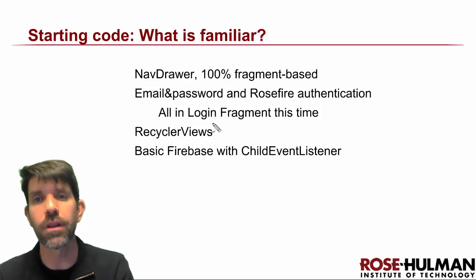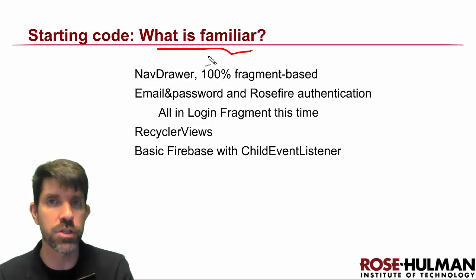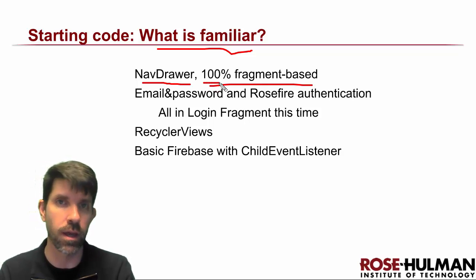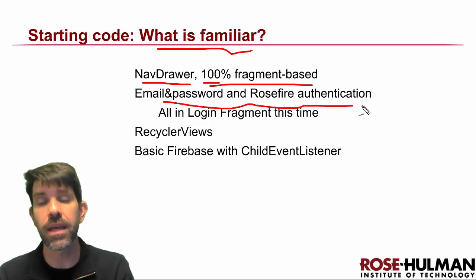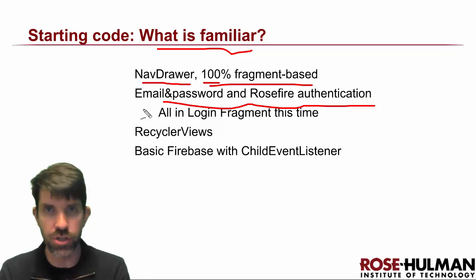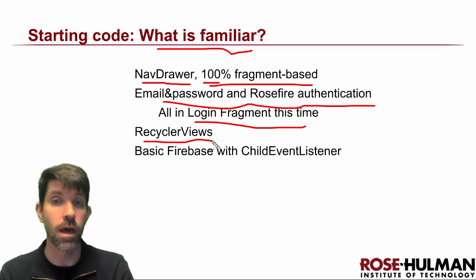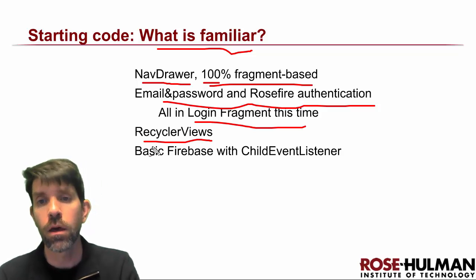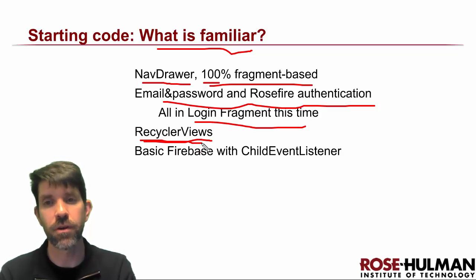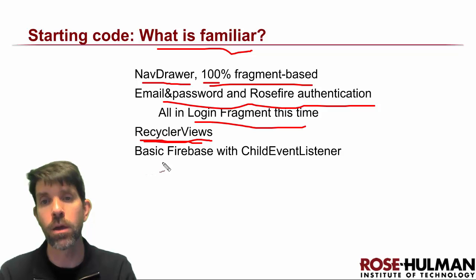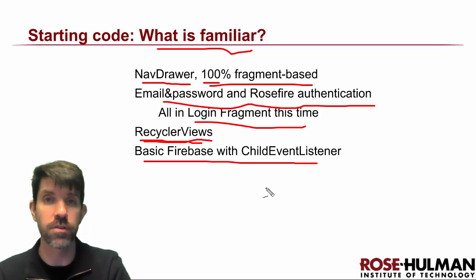At a high level, the overall structure should be very familiar. We're using an app drawer again — no huge deal there. There are lots of fragments: only one activity and about five or six fragments or so. There are two different kinds of authentication. Rather than putting a bunch of callbacks between the login fragment and main activity, we put everything in the login fragment, which is simpler. All the different fragments have recycler views — they're just holding lists of things. Model objects and basic Firebase with child event listeners are also things you've seen.